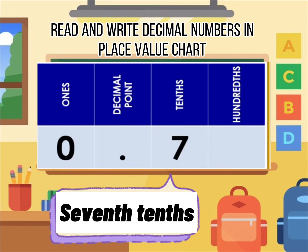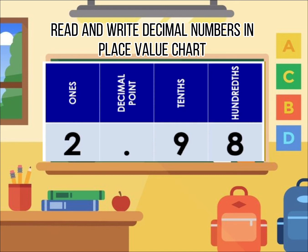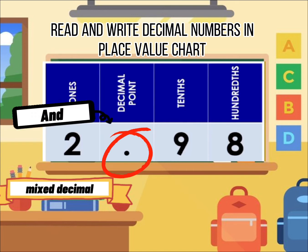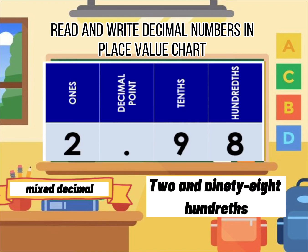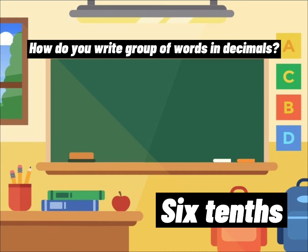The second example is 0.7. Let's place it again in the place value chart. The decimal 0.7 is read as seven tenths since 7 is in the tenths place. For the last example, 2.98 is a mixed decimal number. The decimal point in a mixed decimal is read as 'and,' so 2.98 is read as two and ninety-eight hundredths.